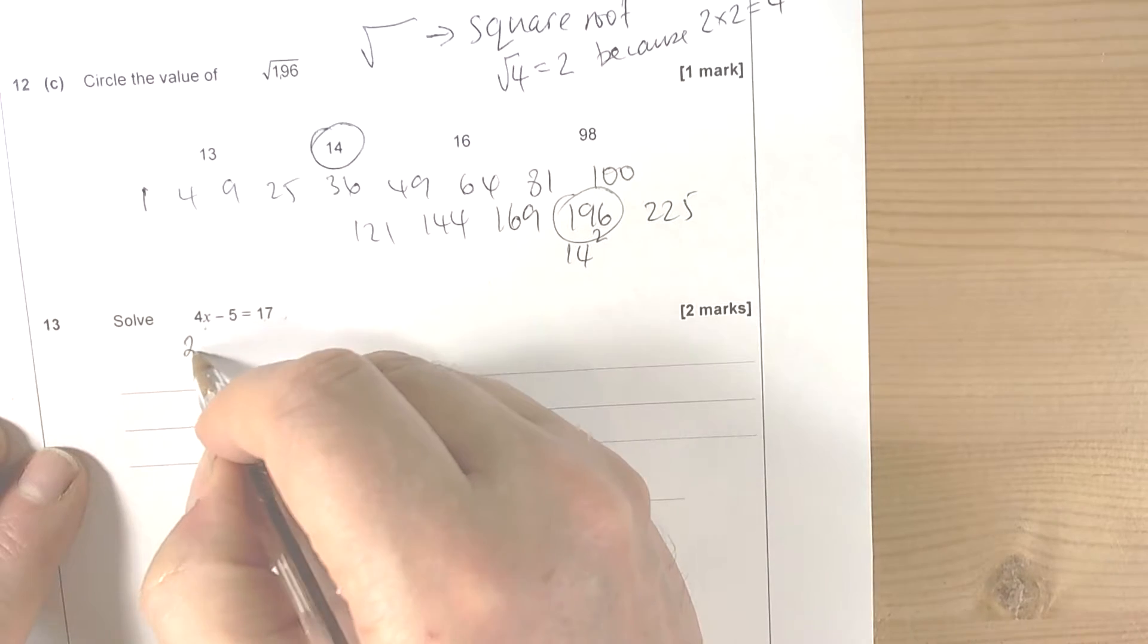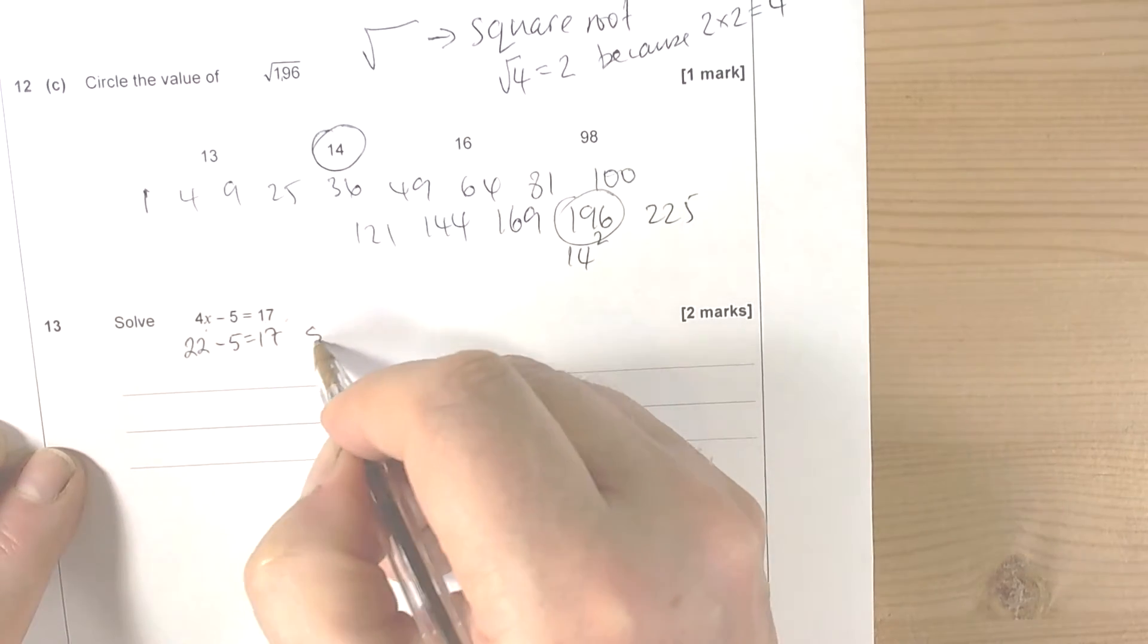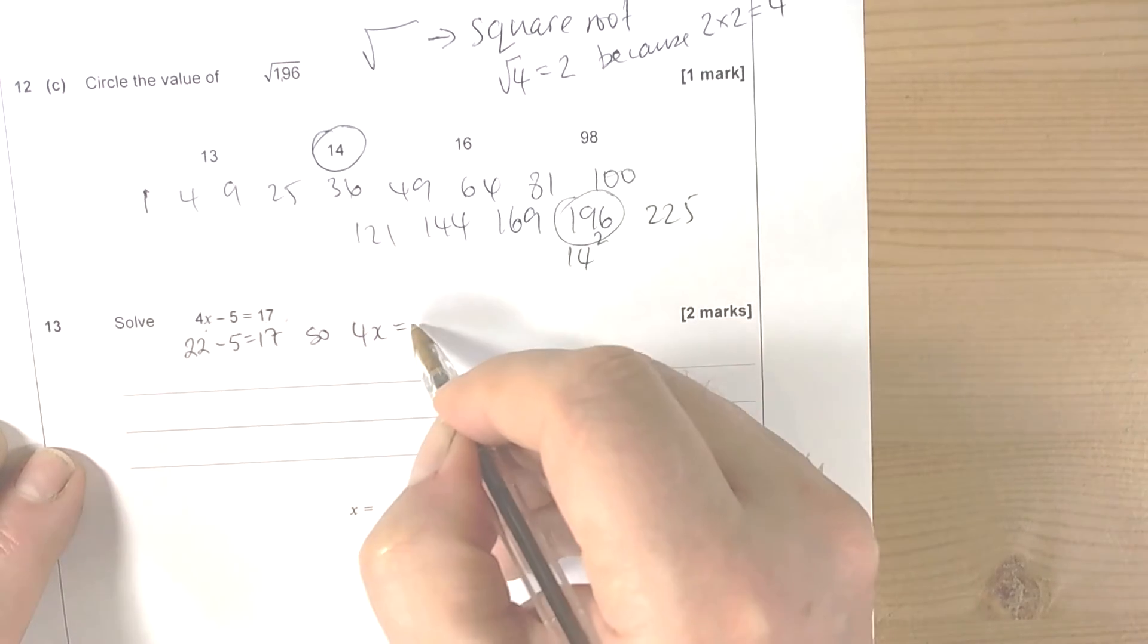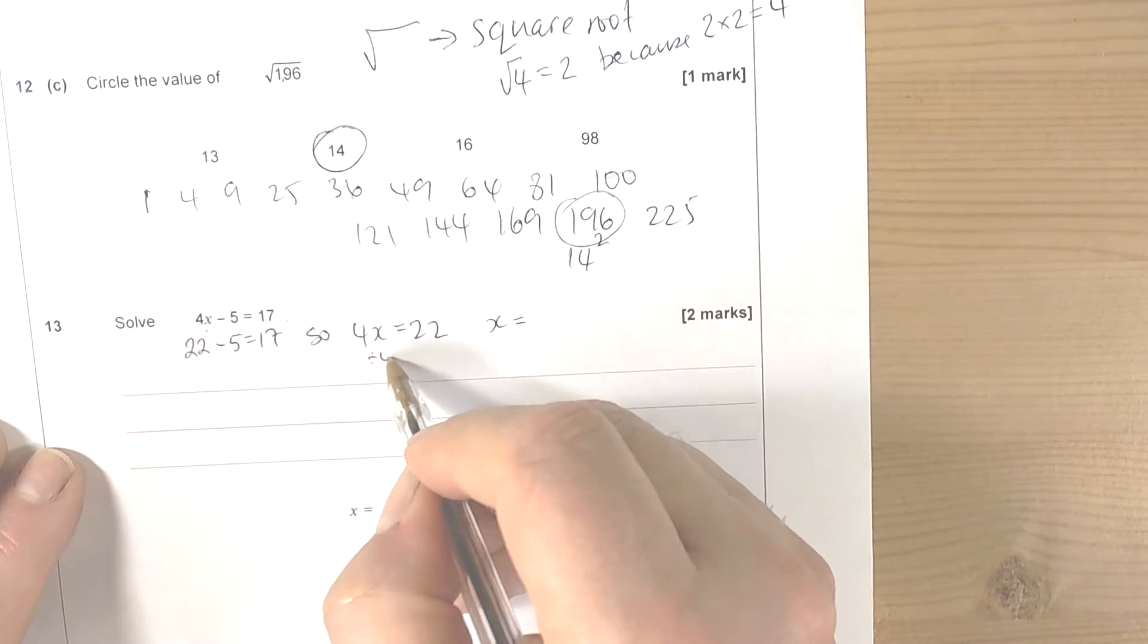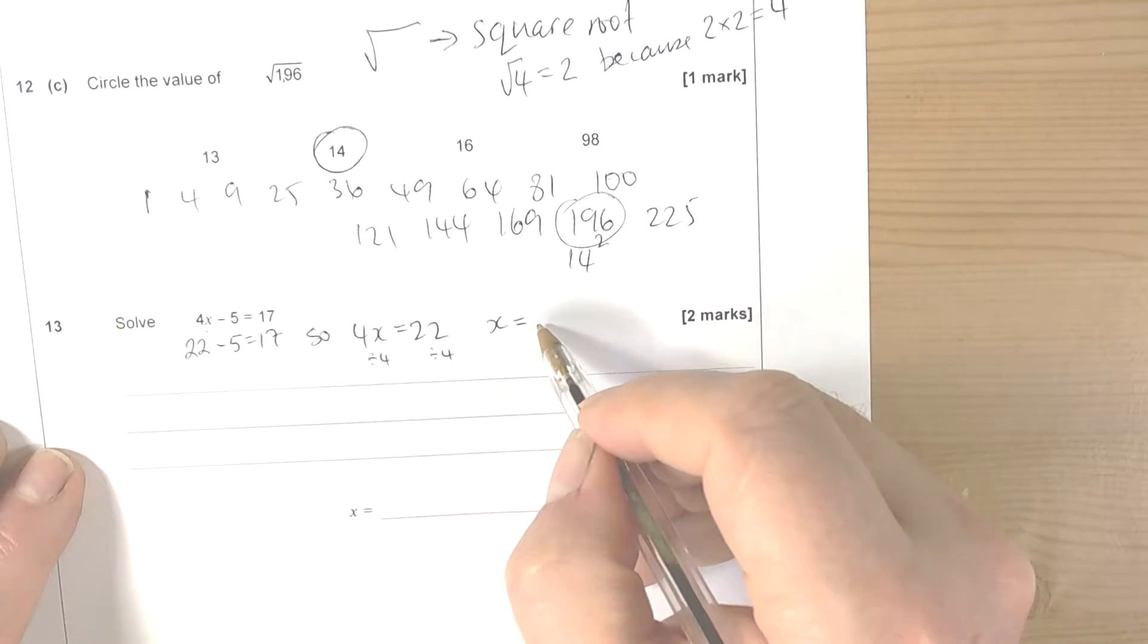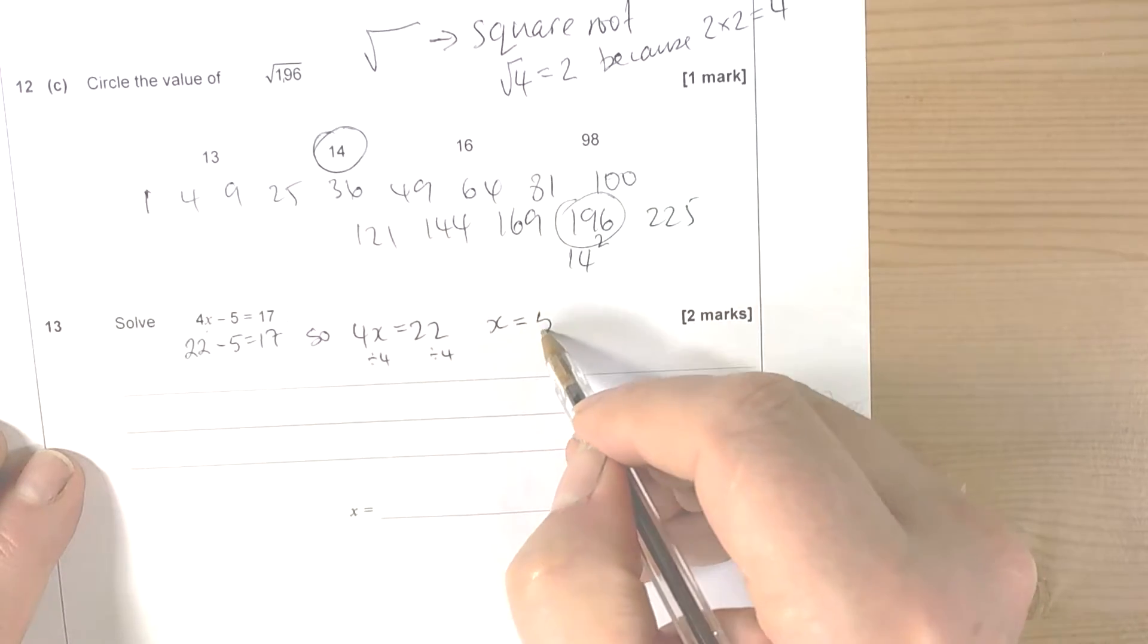So we could say, well that's got to be 22, because 22 take away 5 is 17. So 4x is worth 22. So a single x, because this is about a 4 times table, we would have to divide by 4. So 22 divided by 4 is 5 and a half.